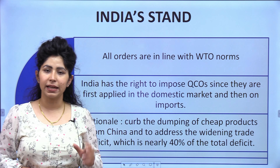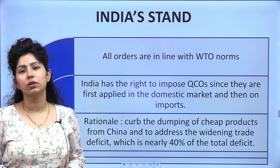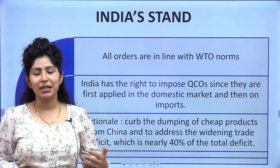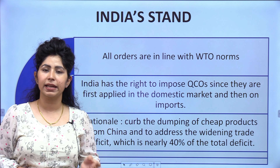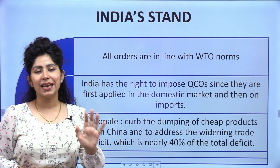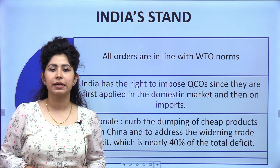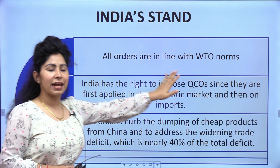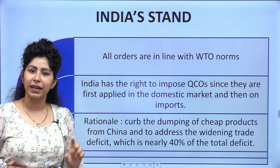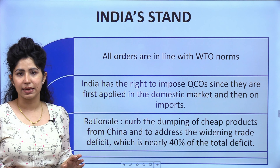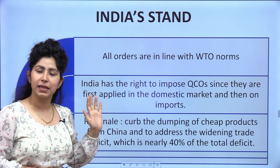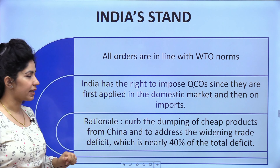So now the government is bringing quality control orders to control this dumping and control the quality of imports, so that our textiles quality improves and we can compete at the international level. All orders are in line with WTO norms — the World Trade Organization that regulates global trade — since they are first applied in the domestic market and then on imports, so there is no discrimination.